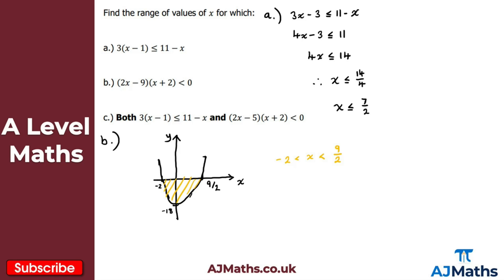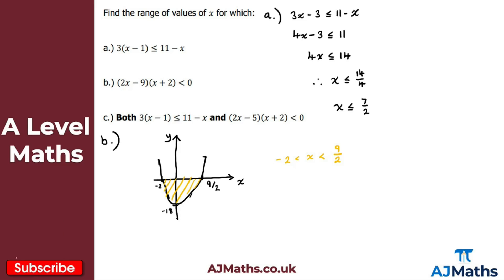Now part c asks for the range of values of x for which both part a and part b hold simultaneously. So we need to find where both inequalities are satisfied at the same time.